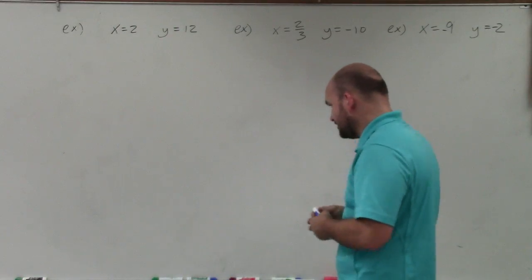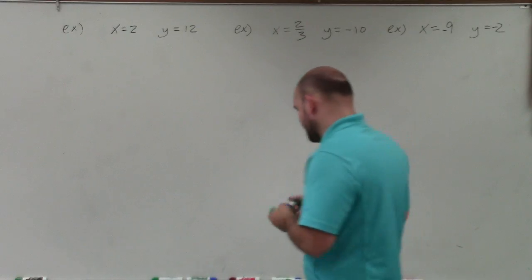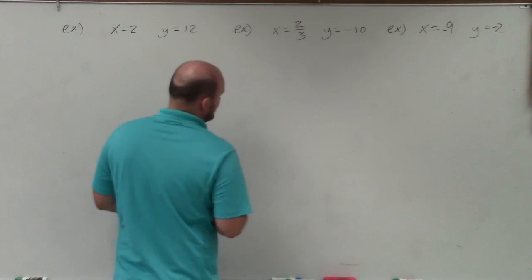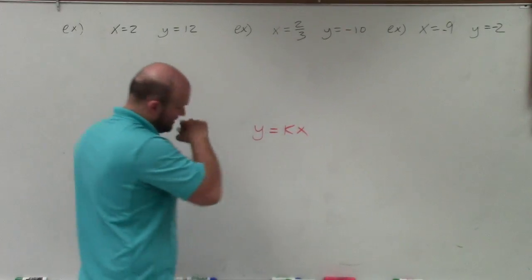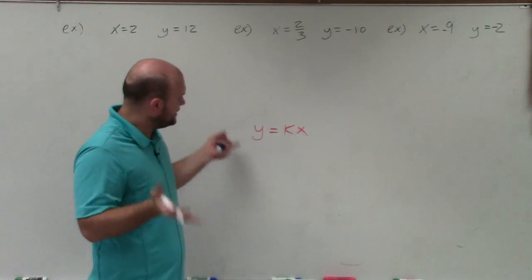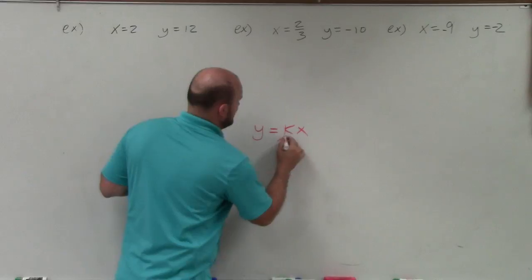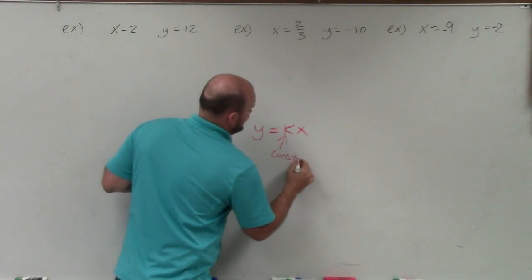So remember, when we're looking at the equation from direct variation, the equation looks like this: y equals k times x. So where x and y are going to be your variables, k is going to represent our direct variation constant.